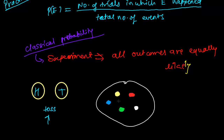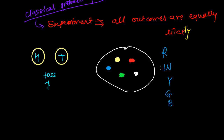If I close my eyes and take out one marble from these five marbles, the outcomes are different — I may get red, I may get white, I may get yellow, I may get green, or I may get blue. So getting red, white, yellow, green, and blue are all equal. I may get any one of them, so these all have the same probability, the same percentage.